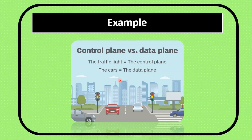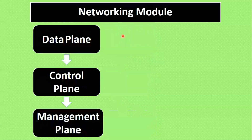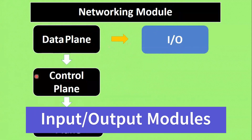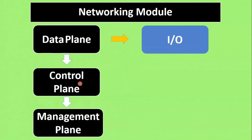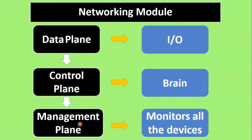Now we will see each plane in detail. The data plane is responsible for forwarding or receiving traffic from the I/O model — I/O standing for input and output. The control plane is responsible for making decisions on how traffic should be forwarded or routed to other devices; we can say the control plane is the brain of the switches or routers. The management plane is responsible for monitoring all device health checkups.